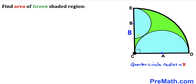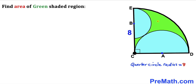Welcome to Premath. In this video we have these two semicircles confined inside a quarter circle. These two semicircles are tangent to each other at one point. The radius for the quarter circle is eight units, the center for the larger semicircle is A, and the center for the smaller semicircle is B. We are going to calculate the area of the green shaded region.